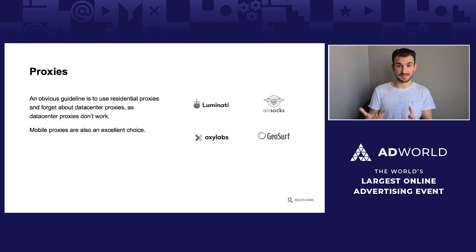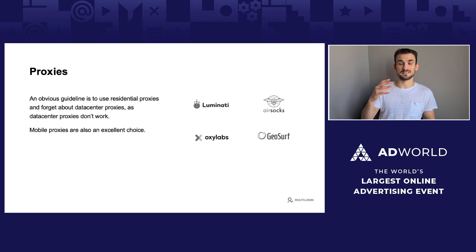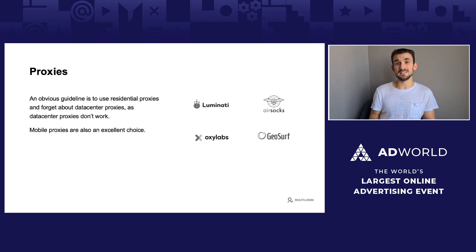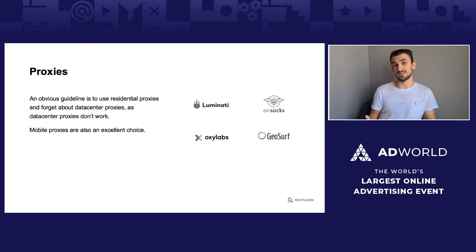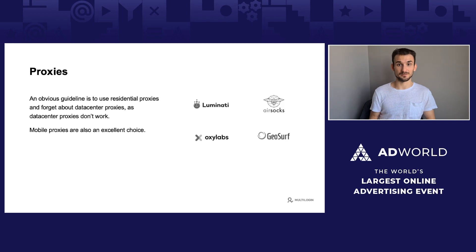Proxies are simply solutions that allow you to mask your IP address for different accounts. There are different kinds of proxies: residential ones and data center ones. Residential proxies are IPs which belong to a normal residential network — for example, the IP address you use at home. Data center IPs belong to servers and data centers. If you're using data center IPs, websites will trust you less, and in the advertising world, data center proxies no longer work. The only proxies that work with advertising accounts are residential proxies. Services that provide residential proxies include Luminati, Oxylabs, Geosurf, and Airsox.